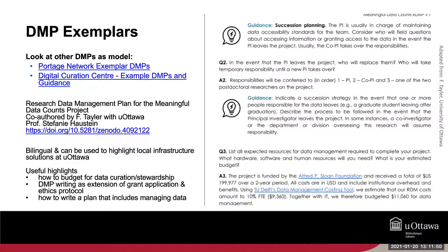Looking at DMPs published by others will help you in developing your own. The Portage Network has published several exemplar DMPs covering a range of disciplines and research methods — digital humanities, mixed methods, natural science, and social sciences — highlighting best practices in those disciplines. There are other sources of exemplar DMPs, including the International Digital Curation Center. We also have an example of a DMP co-authored by our research management librarian Felicity Taylor and Professor Stephanie Halstein for the Meaningful Data Count project, which puts emphasis on data sharing, reuse, and budgeting for data curation and stewardship activities.